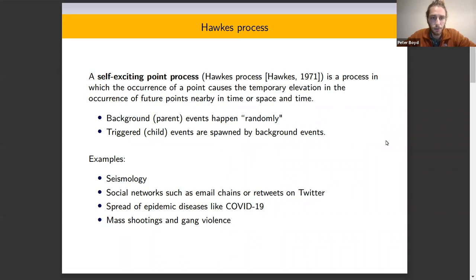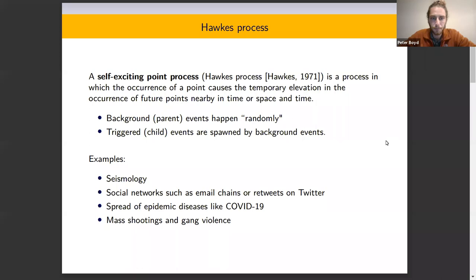A Hawkes process, or a self-exciting point process, is basically just a collection of points in which the occurrence of one point causes a temporary elevation in the occurrence of future points in nearby space and time. It's a two-part sequence in which we have background or parent events that happen randomly, and these background points are then able to trigger child events.